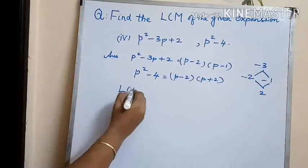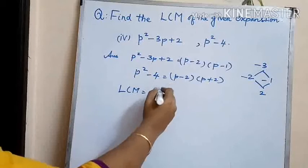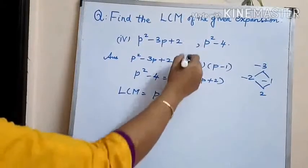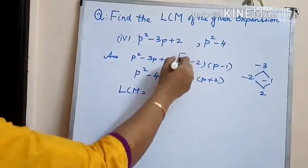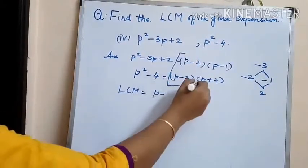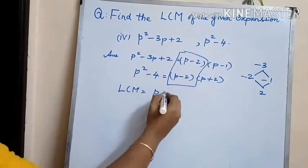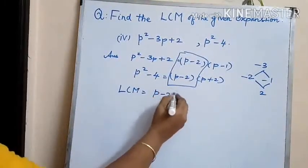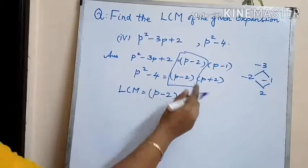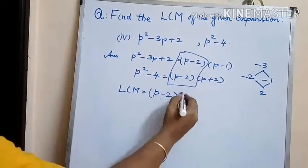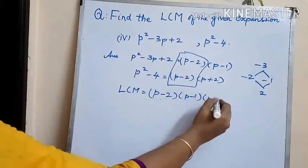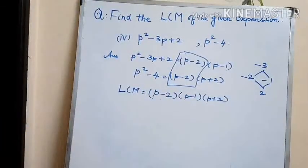Therefore the LCM of these two polynomials: we have p minus 2 as a common factor in both polynomials, so we write it once. The LCM is p minus 2 into p plus 2 into p minus 1.